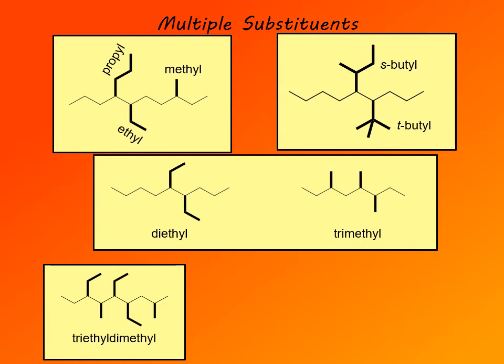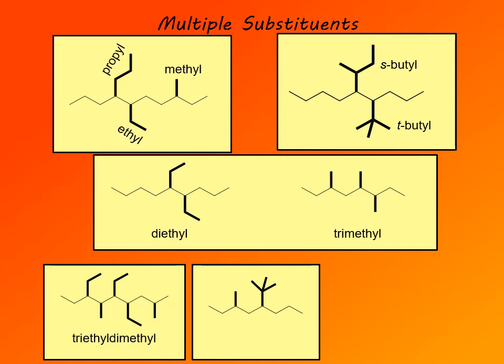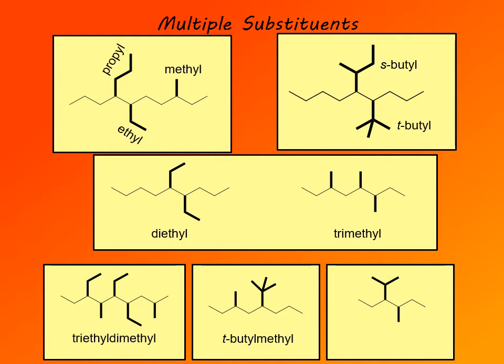Prefixes di-, tri-, tetra- are not alphabetized. Also, prefixes that are separated from the rest of the name by a dash, like sec- and tert-, are not alphabetized. But those that are part of the name of the substituent, such as neo- or cyclo-, are alphabetized. For example, tert-butyl-methyl: tert is a prefix and not alphabetized, so butyl still comes before methyl. And isopropyl-methyl: iso- is alphabetized because it is part of the name, not separated by a dash, so isopropyl comes before methyl.